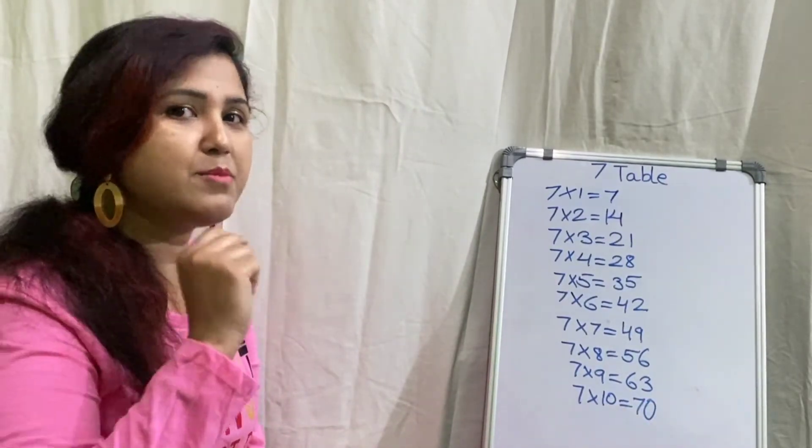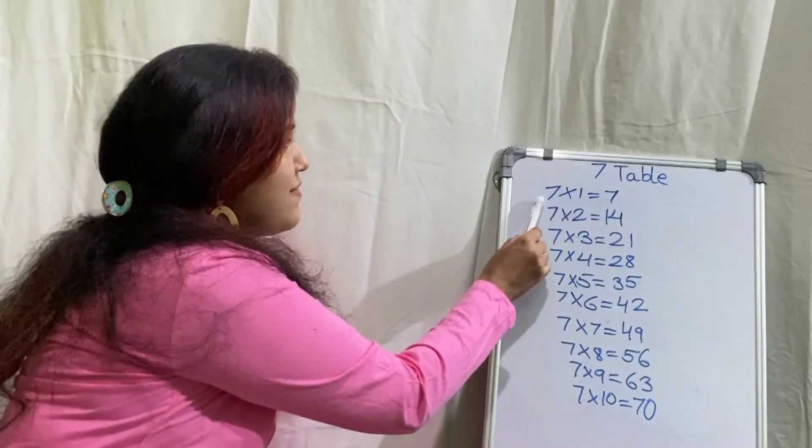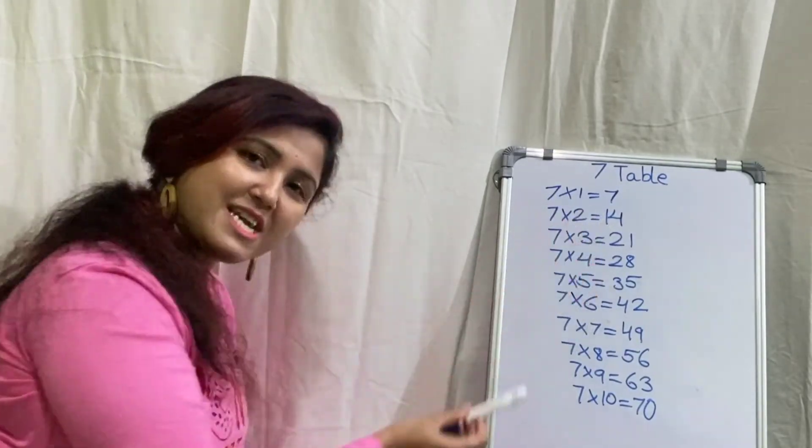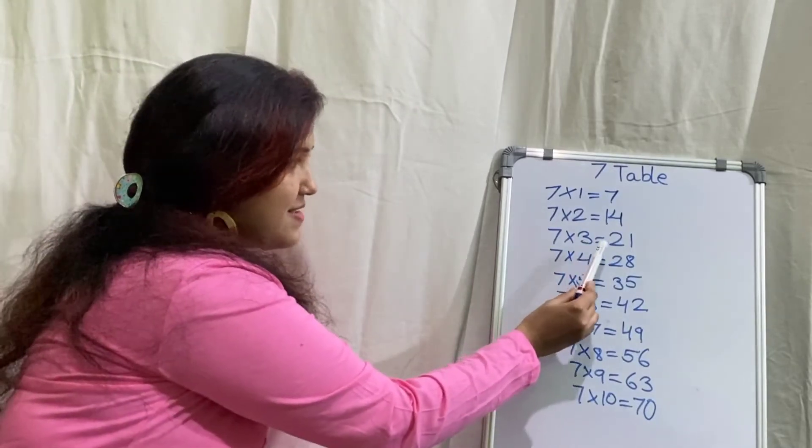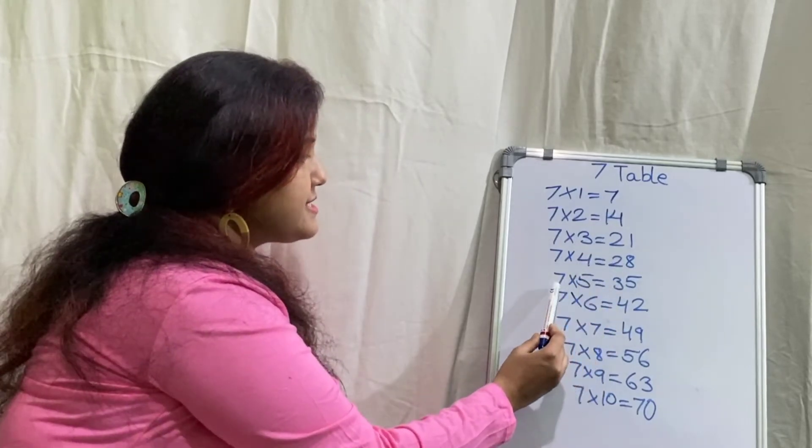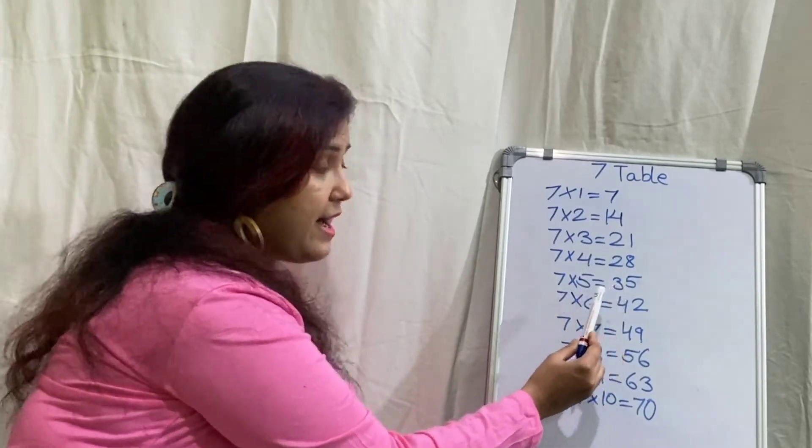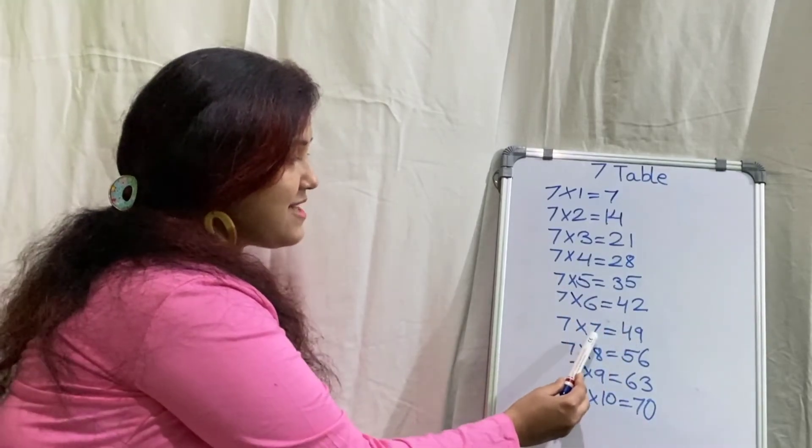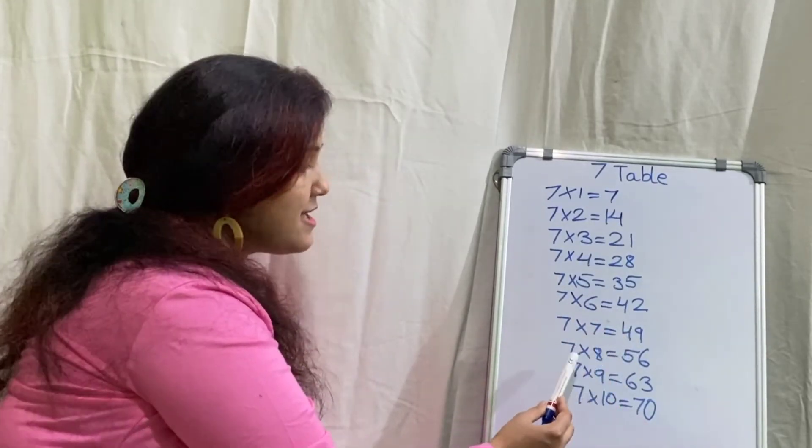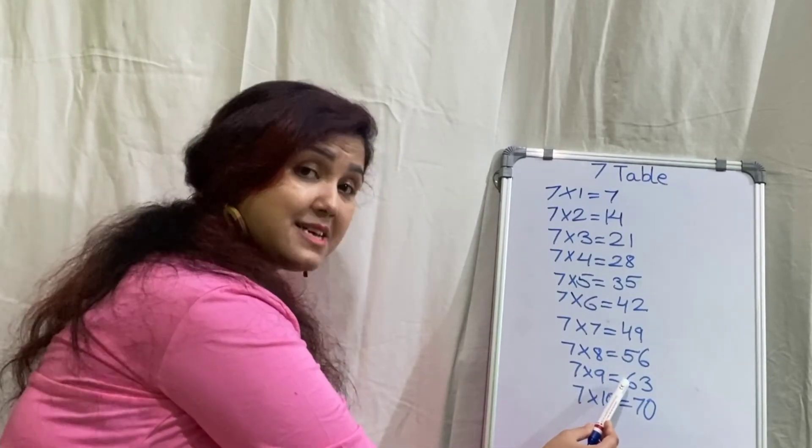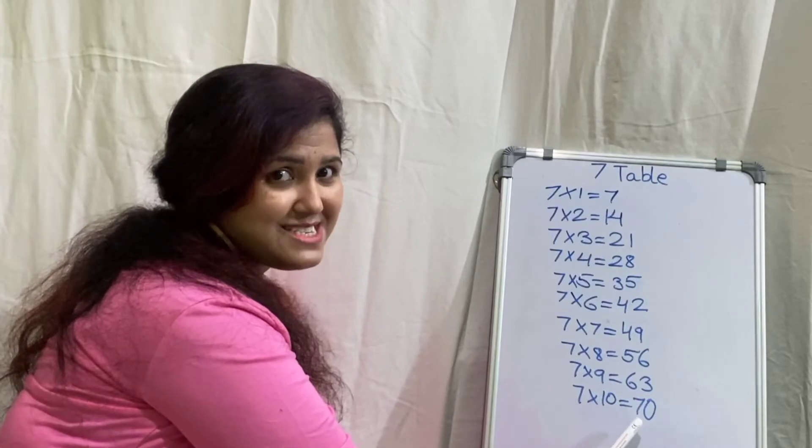Now children, let's repeat one more time. Seven ones are seven, seven twos are fourteen, seven threes are twenty-one, seven fours are twenty-eight, seven fives are thirty-five, seven six are forty-two, seven sevens are forty-nine, seven eights are fifty-six, seven nines are sixty-three, seven tens are seventy.